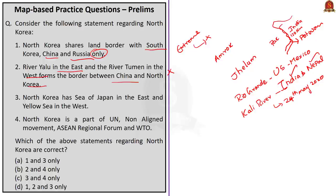Now, we are going to see two more rivers which form political boundaries between states of India. First is river Kaveri. River Kaveri forms a boundary between Tamil Nadu and Karnataka. River Kaveri originates in Karnataka at Talacauvery in Kodagu district. Initially, river Kaveri flows through the South Karnataka plateau, and when it reaches the plains, it forms the Shivanasamudra waterfalls. Near those waterfalls, there is a hydroelectric station.